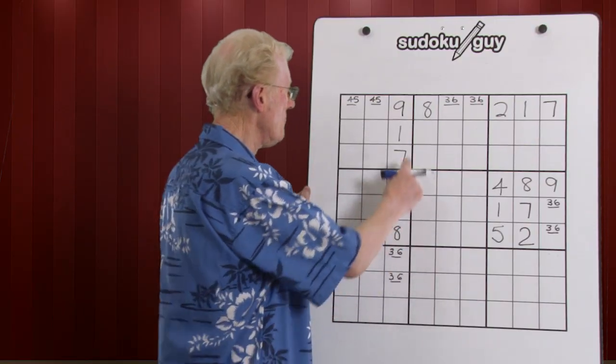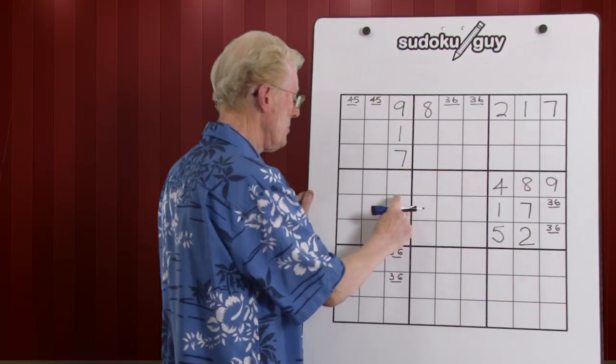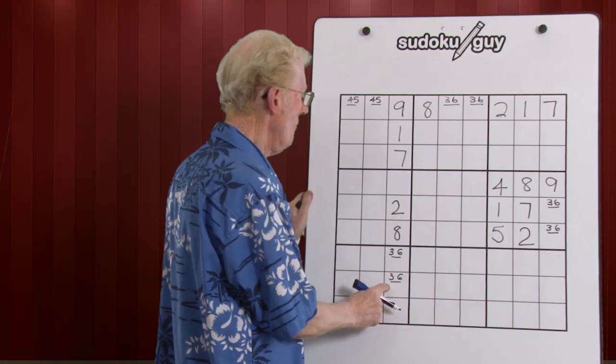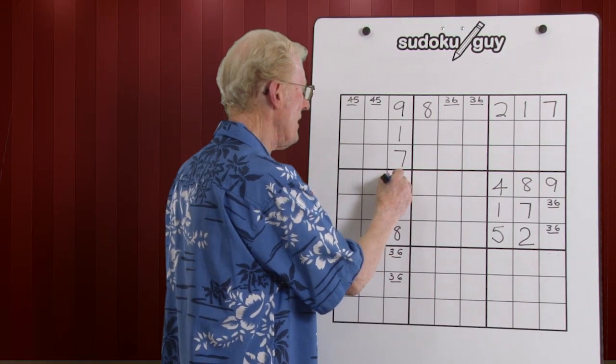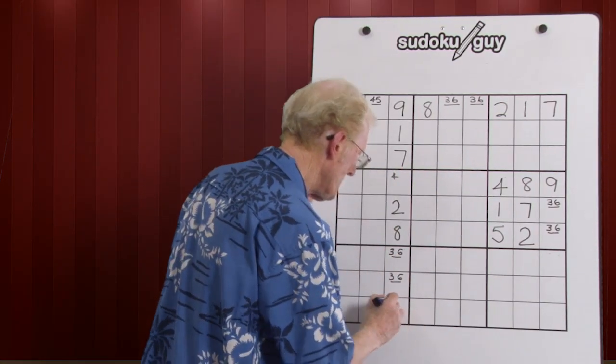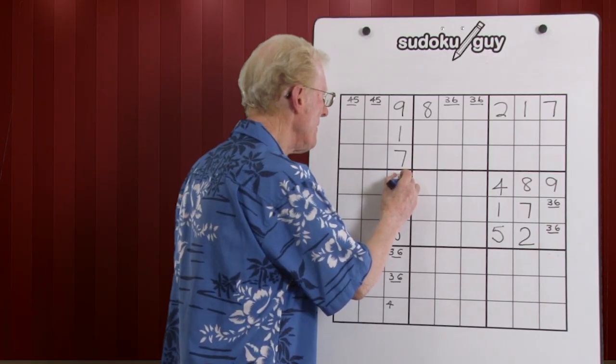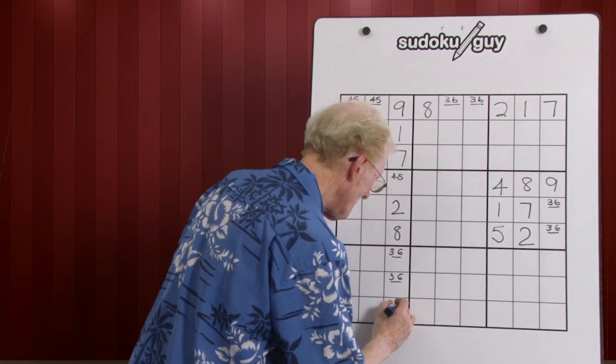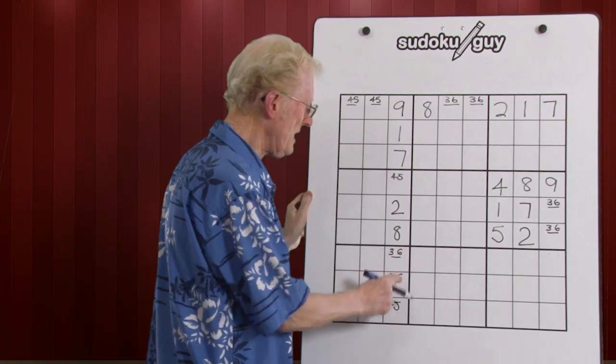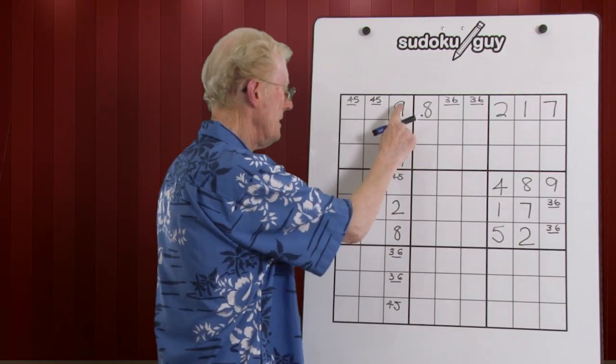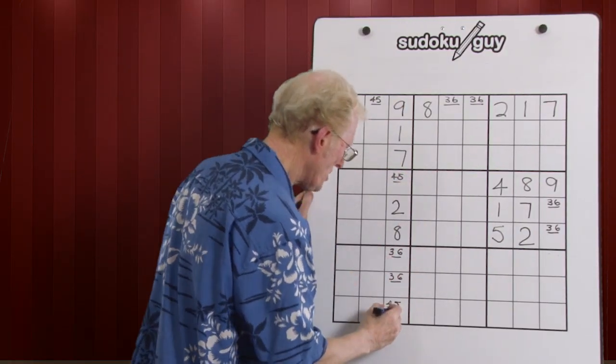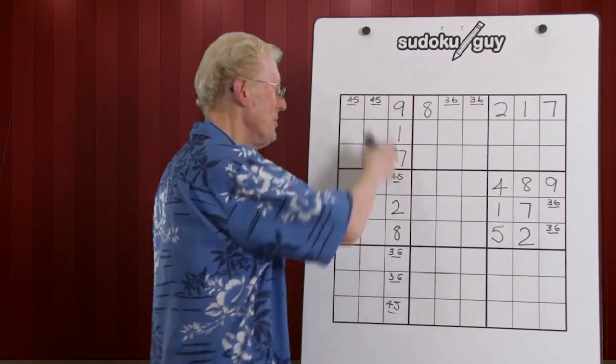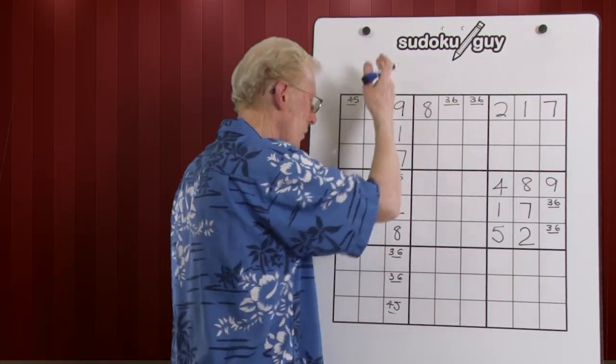So we go through the same procedure for the column. One, two, three, spoken for. Four is missing, so we can put a four there and a four down here. Five is missing, we put a five there and a five down there. Six is here, seven, eight, nine. So we now finish up also with a matching pair. The same principle works whether it's a row or a column.